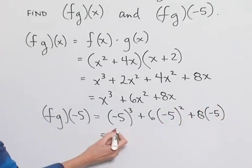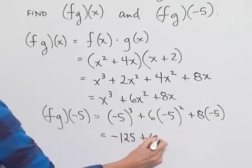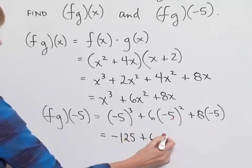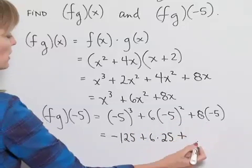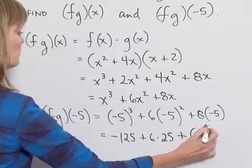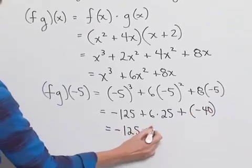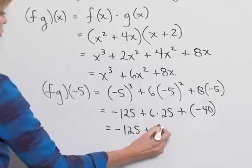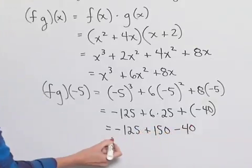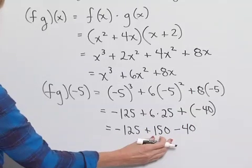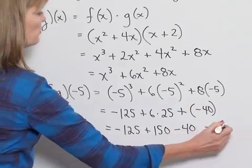Negative 5 cubed is negative 125. We'll have plus 6 times, negative 5 squared is 25, plus, and here we have 8 times negative 5, which is negative 40. Let's simplify further. That gives us negative 125 plus 6 times 25 is 150, and then minus 40. Combining gives us negative 125 plus 150, which is 25, and 25 minus 40 is equal to negative 15.